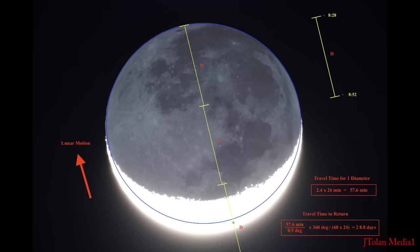If you look at the calculations in the lower right, the travel time for one diameter is 2.4 times 24 minutes, that's the difference in time, equals 57.6 minutes. So it takes 57.6 minutes to travel one diameter.